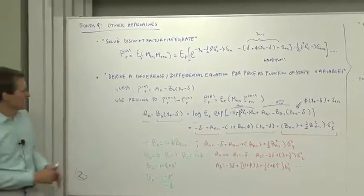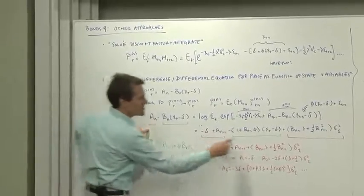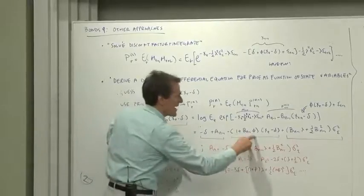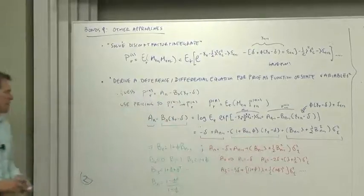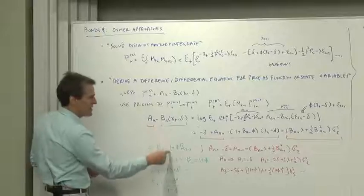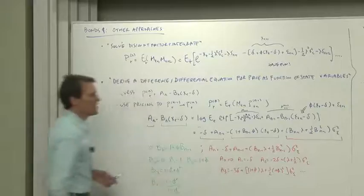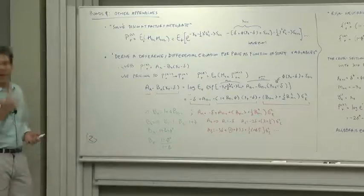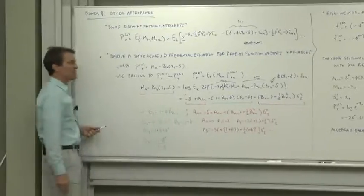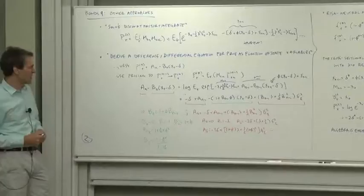This has to hold for every x, so the constant terms have to be equal to each other, and the terms multiplying xt minus delta have to be equal to each other. So the green terms say that bn has to equal 1 plus phi times bn minus 1. Aha! That's a difference equation for the bns. I know b naught has to be 0. The price of a maturing bond is 1. So then we just work this through.